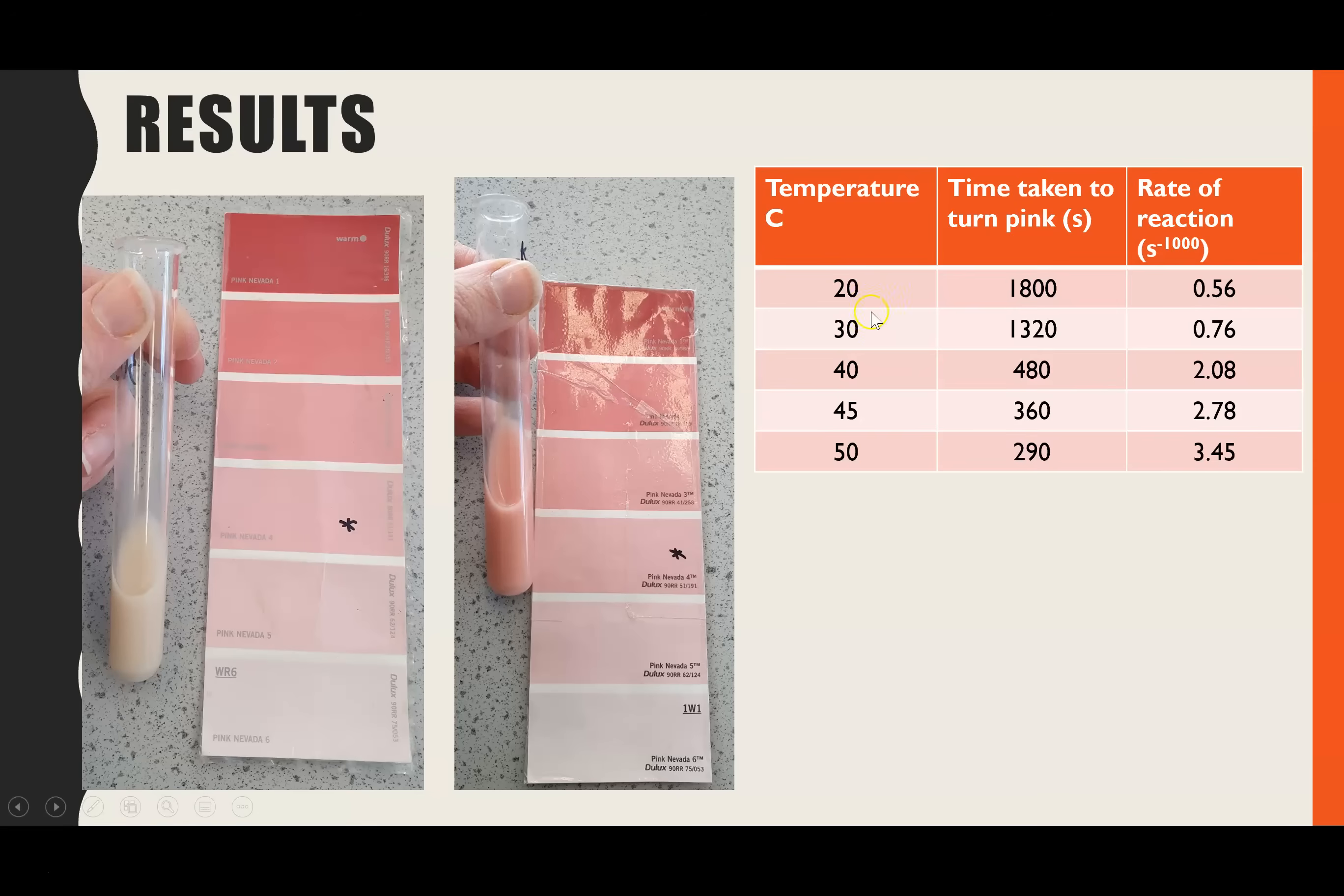Here were my results for each of those. We can see that the time taken did decrease, and therefore the rate of reaction increased. I did the rate of reaction as 1,000 divided by time, simply because if I did 1 divided by time, I ended up with values that were 10 to the minus 3. So for easier pattern interpretation, I did it as 1,000 divided by time, so it's clearer to see the pattern.